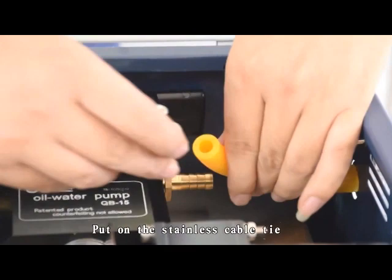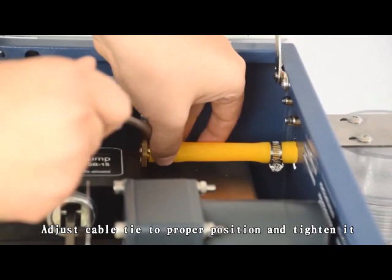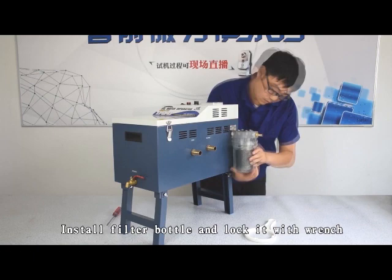Install connector pipe to mixture inlet, adjusting cable tie to proper position and tighten it. Close the cover, install filter cover, and lock it with wrench.